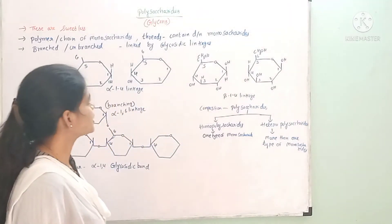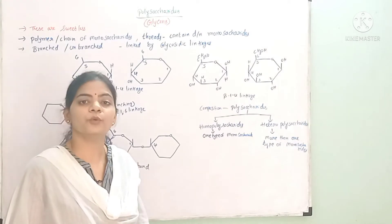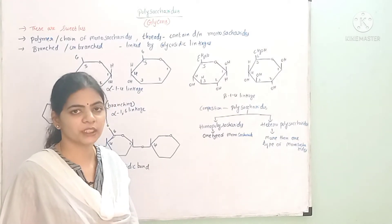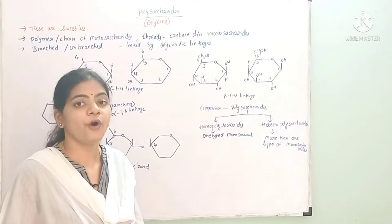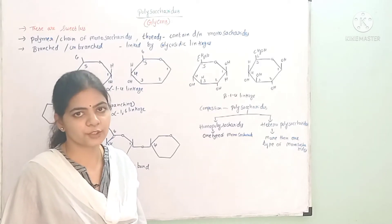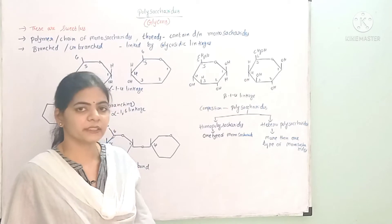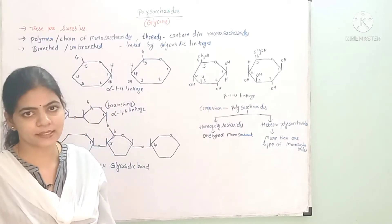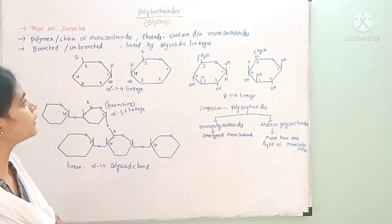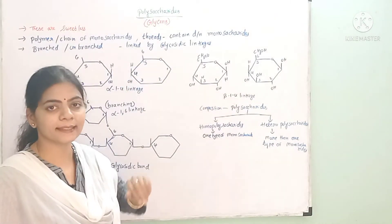Polysaccharides consist of monosaccharides. We know that monosaccharides have one sugar molecule, oligosaccharides have two to nine molecules. But polysaccharides tend to be hundreds of monosaccharides. Another name for these polysaccharides — they are also called glycans.